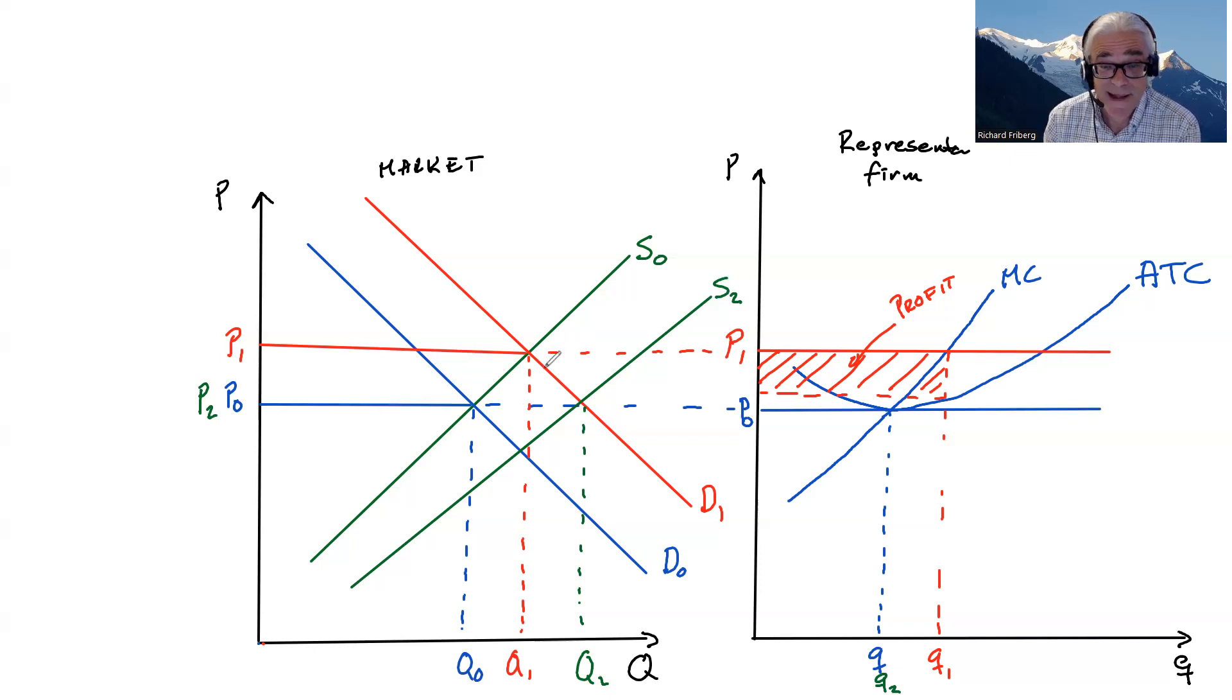The social planner need not tell firms that now more bread needs to be produced. Instead, firms see the increase in price, not necessarily knowing why prices increased, but they see the increase in price and see that if they know their own costs, know that there are profits to be had from entering. And by entering, they help increase supply and drive down price.